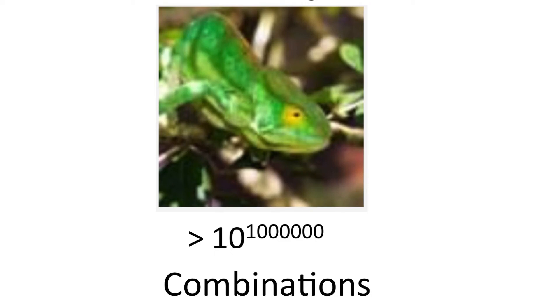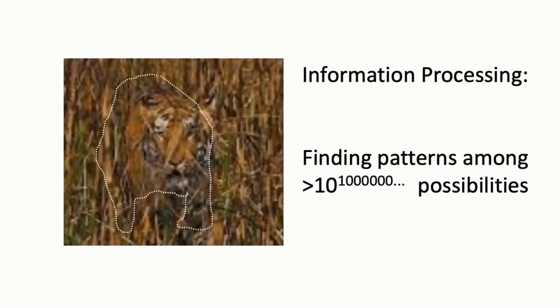And this is just for still images. And we process moving images and much, much more. We're carving out from that space of possibilities that is a number at least with millions of zeros behind it. So that's what I mean by information processing.